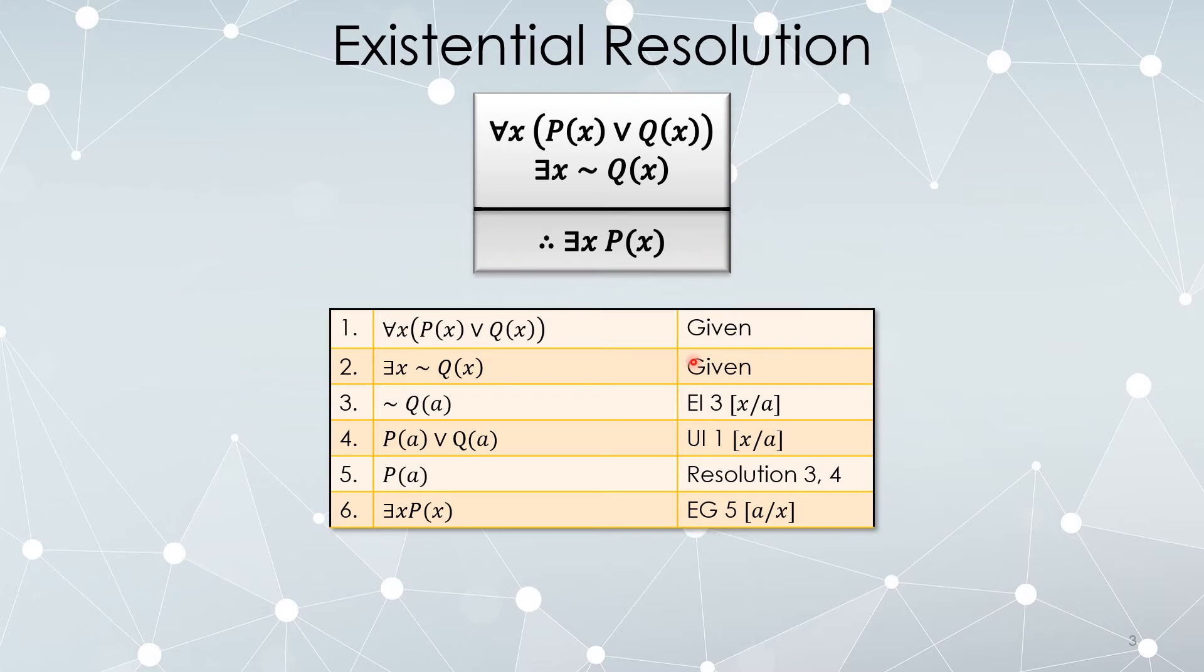So we state our two givens. Then we existentially instantiate this second given, replacing every x with A. Existential instantiation is a bit particular. We have to be careful that we are not using a variable that exists already, and we haven't. Lines 1 or 2 don't involve the variable A, so we're free to instantiate an existential statement using this variable.